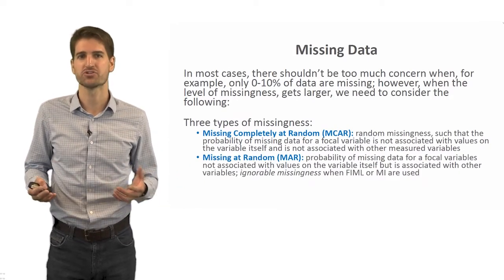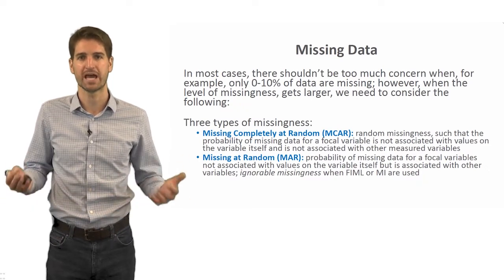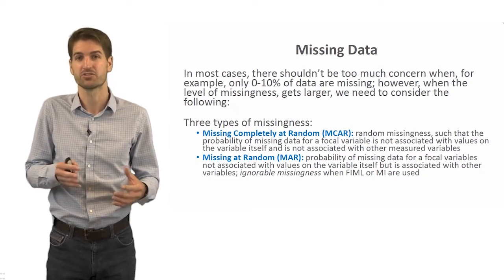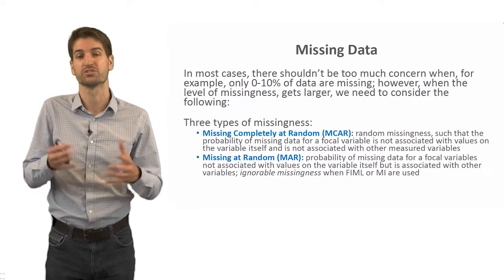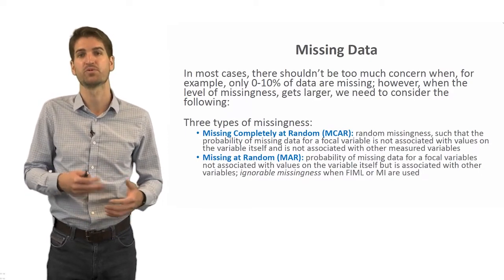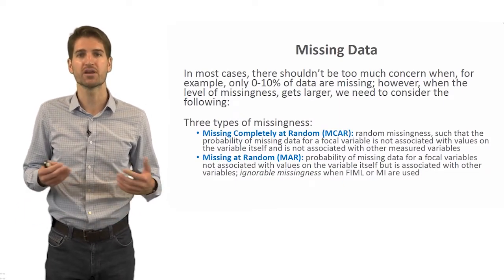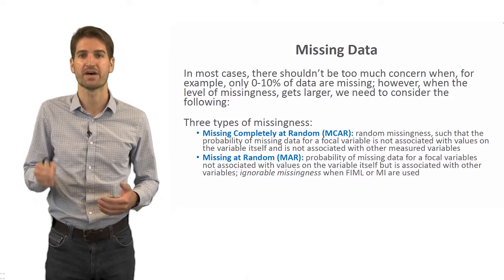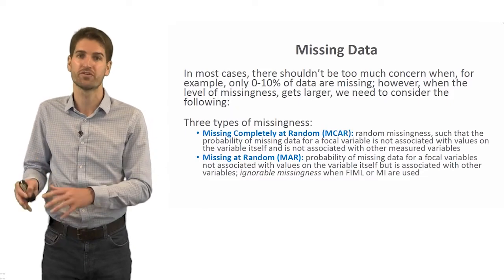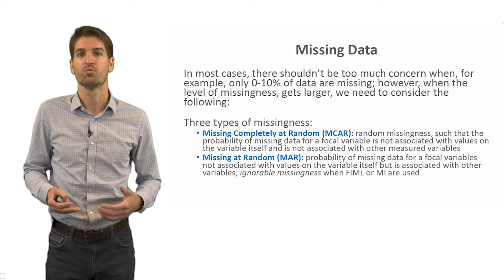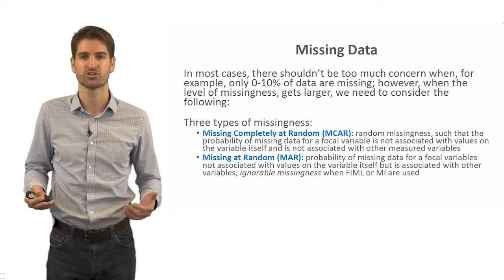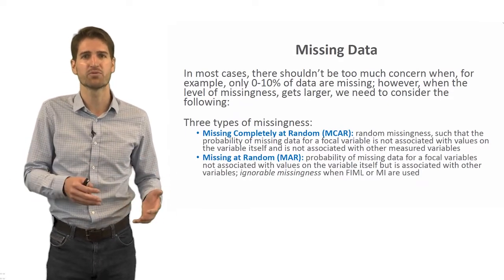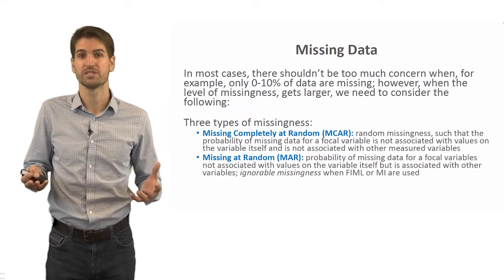The next type is missing at random, or MAR. The name is a little misleading because it doesn't actually mean people are missing data at random; there is some systematic reason, potentially identifiable, for why some people are missing data on certain variables. MAR means the probability of missing data for a focal variable is not associated with values on that variable itself, but is associated with other variables. This is sometimes referred to as ignorable missingness when full information maximum likelihood or multiple imputation are used.